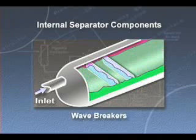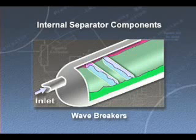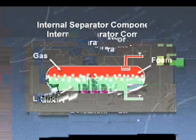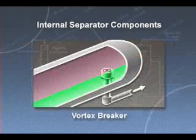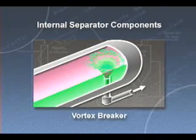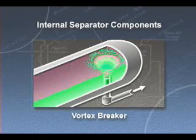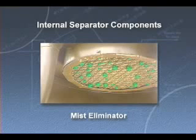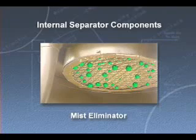Wave breakers limit the wave propagation that might otherwise occur in large horizontal vessels. Defoaming plates reduce foaming at the gas-liquid interface, which tends to occur when gas bubbles are liberated from the liquid. A vortex breaker keeps vortexes from developing when the liquid control valve is open, thus preventing gas from being drawn out of the vapor space and re-entrained in the liquid outlet. Mist eliminators coalesce and collect small liquid drops from separated gas before the gas leaves the vessel.